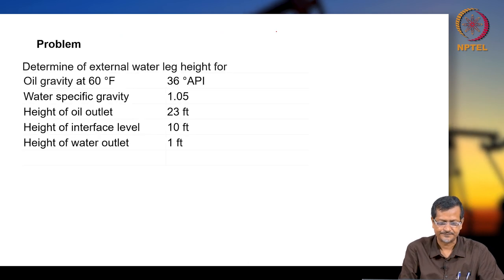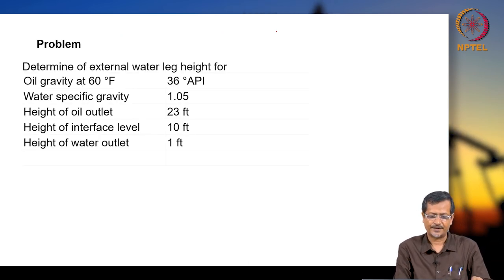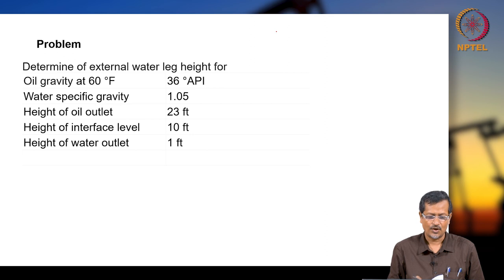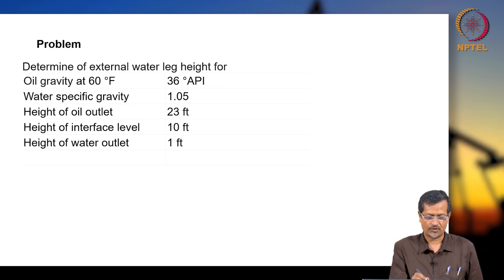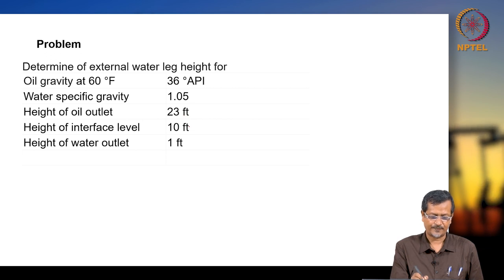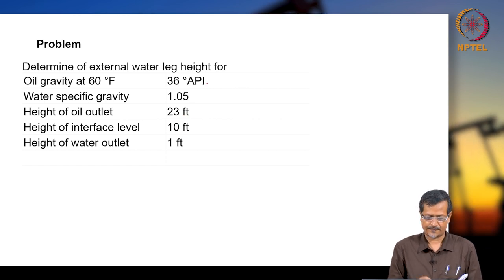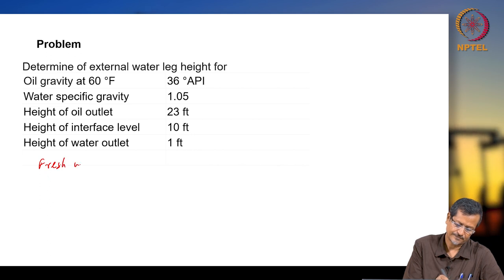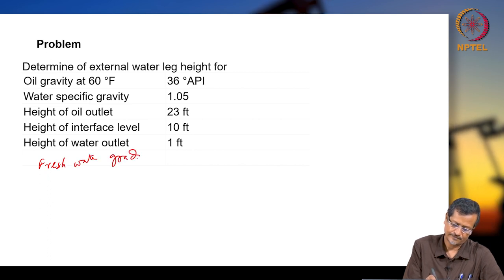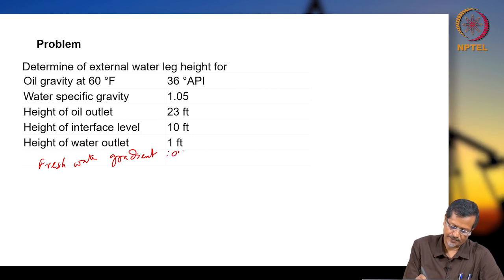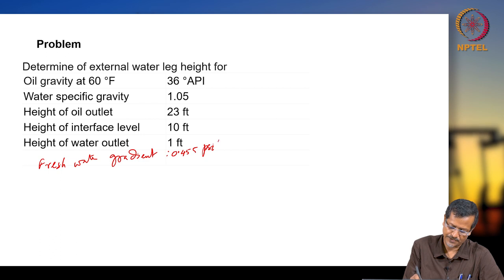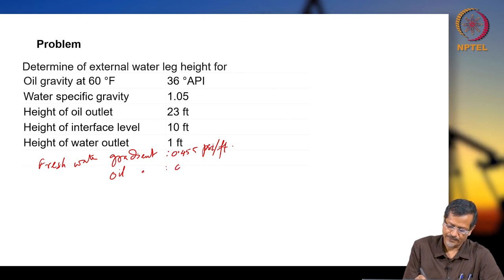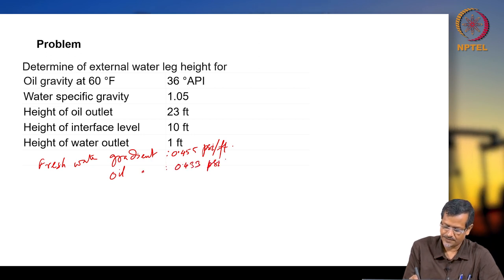One problem we have to solve: determine the external water leg height for oil with gravity at 60°F given the API, water specific gravity 1.05, height of oil outlet, height of interface level, height of water outlet. Some more data is also given: freshwater gradient 0.455 psi per foot and oil gradient 0.433 psi per foot.